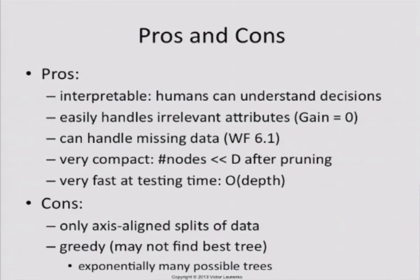They're very good at handling irrelevant attributes. So if you stuff lots of noise in the data, decision trees are very good at ignoring noise because noise usually has zero gain. So it will just focus on the other attributes and ignore the noise.